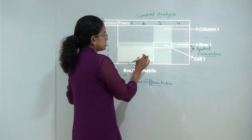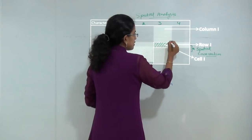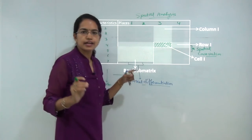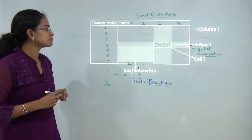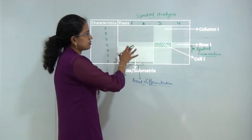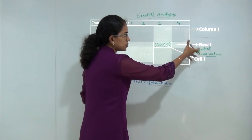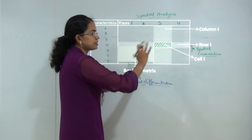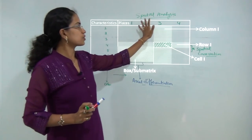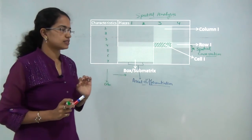Based on this, he talked about cell, and a cell was a single unit which has a similar kind of geographical settings. He tried to explain the relationship between the columns, the rows, and within the columns and rows, based on this diagram explaining the concept of spatial analysis.